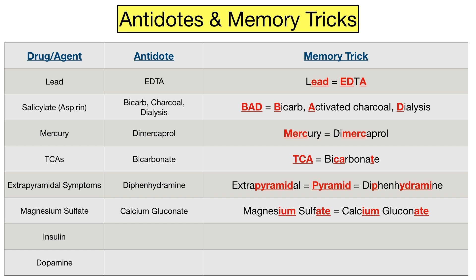Moving on to insulin — this is an easy one. We know insulin is used in diabetes and to treat high glucose levels. So if someone takes too much insulin, the treatment is to give more glucose. There is no trick necessary as the treatment is self-explanatory.